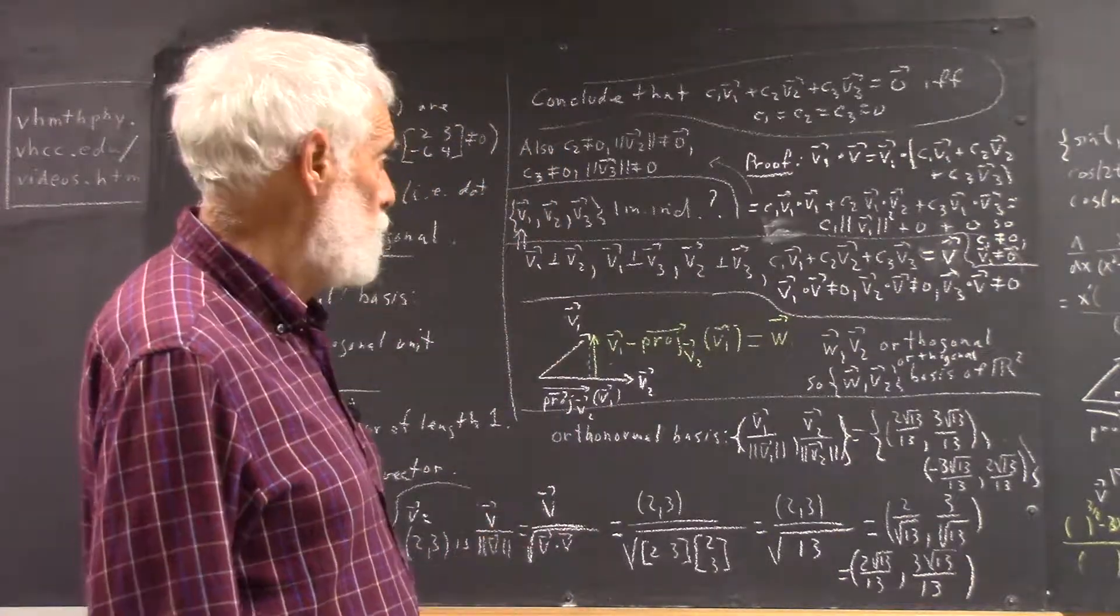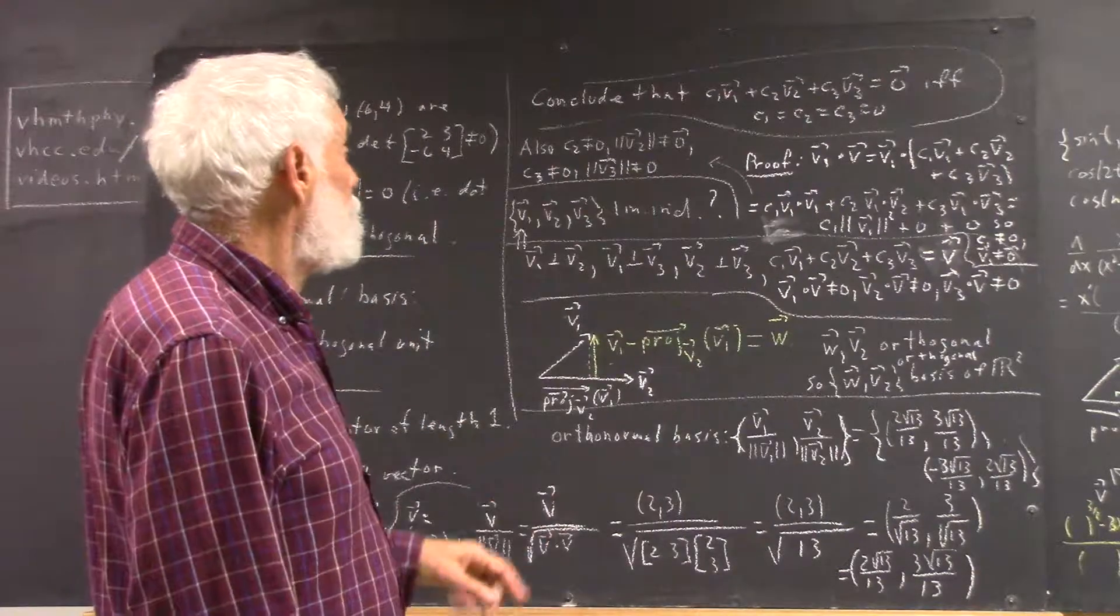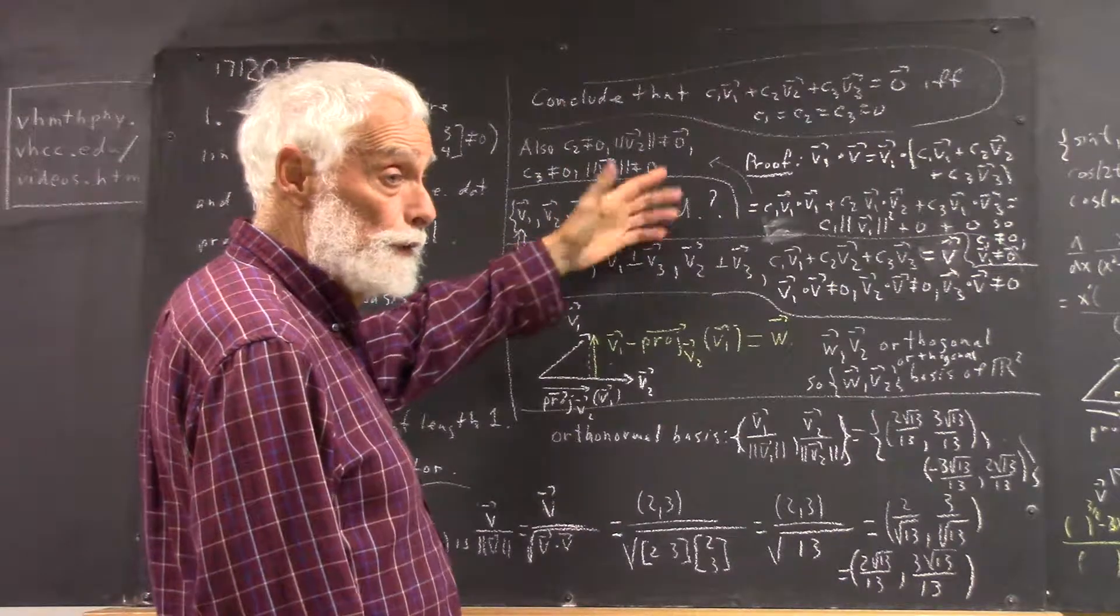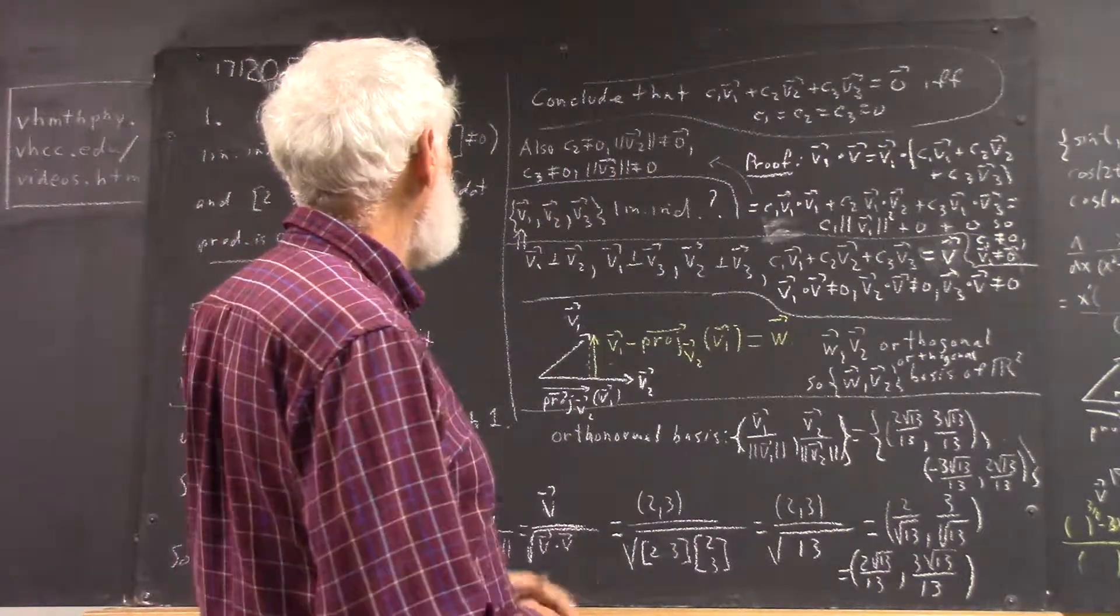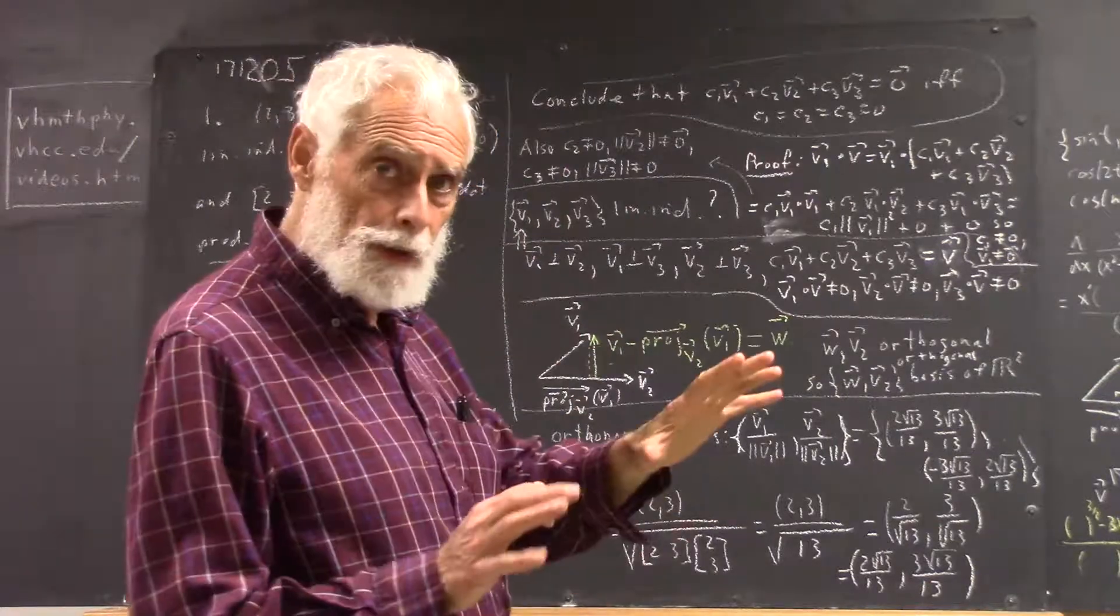Okay, well then we can also say that c2 and v2—magnitude of v2—c3, magnitude of v3, none of these can be zero. So from that, and I kind of leave this as an exercise...